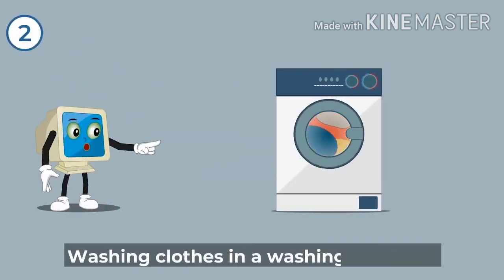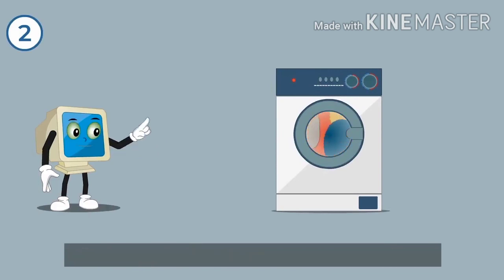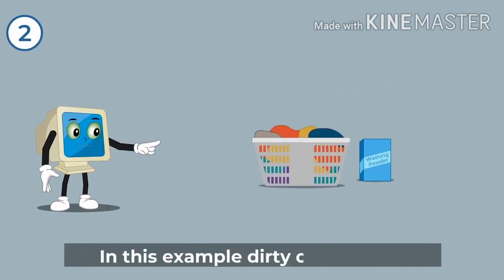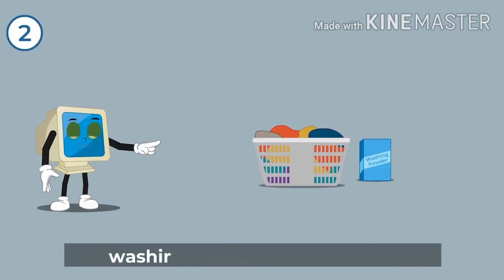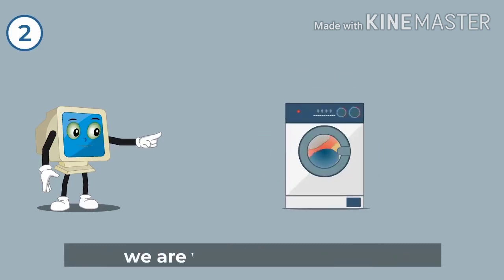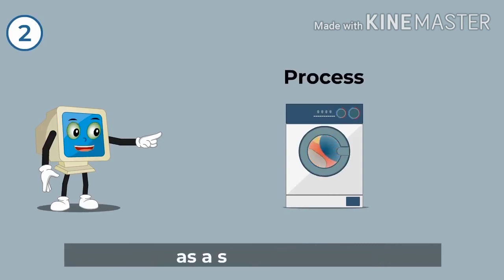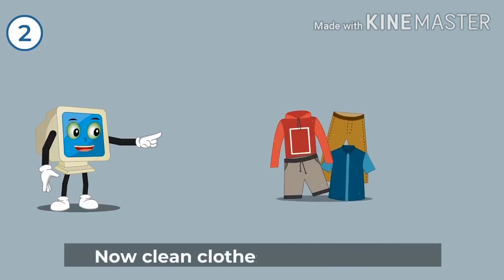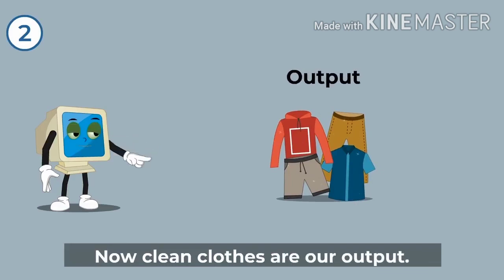Example 2: Washing clothes in a washing machine. In this example, dirty clothes and washing powder are our input. We are washing the clothes as a set process. Now, clean clothes are our output.